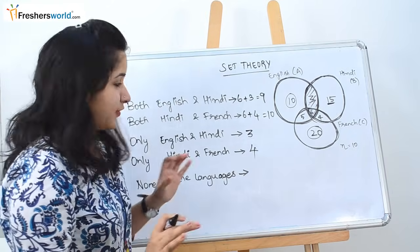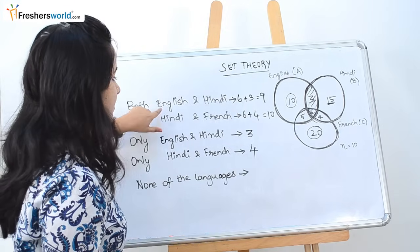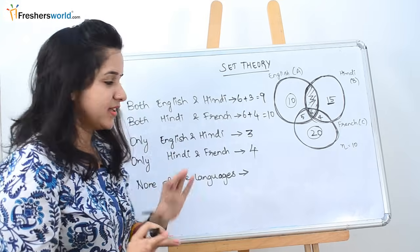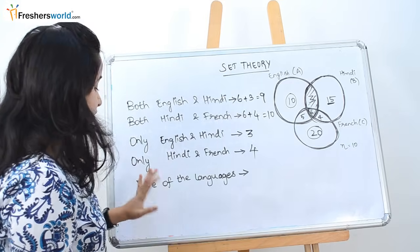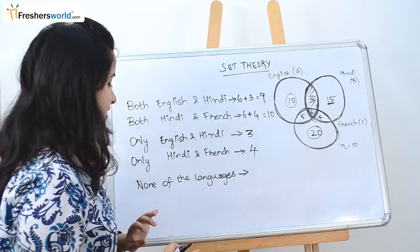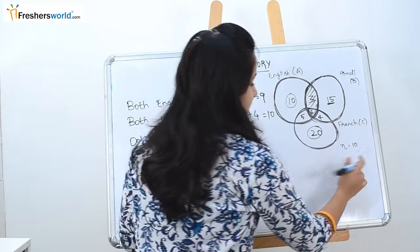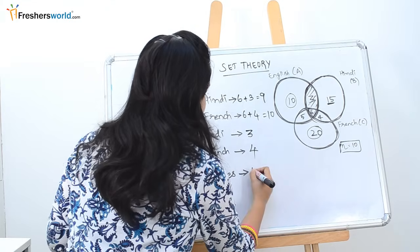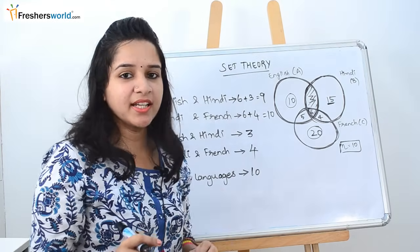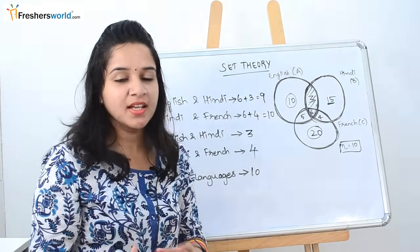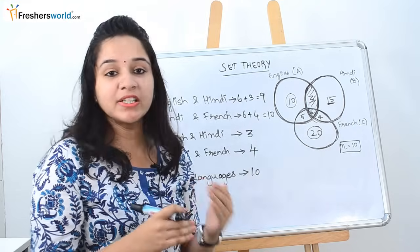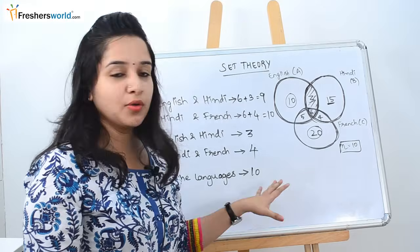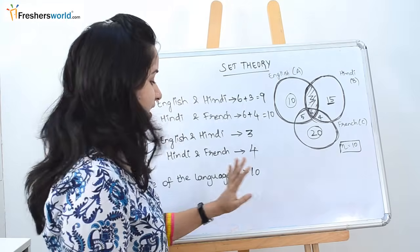I hope you understand the differences. Here they are asking both English and Hindi, and here they are asking only English and Hindi. Similarly for the next question — none of the languages. In certain questions they would have given none of the languages as 10, and we can directly write it. In certain cases they will give you the total number of persons and you have to subtract — we will deal with those kinds of problems in a later video. As of now they have given it directly, so we are just taking it as such.